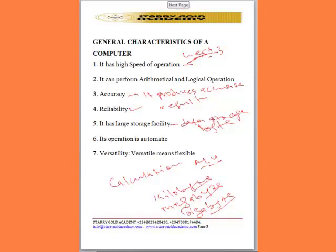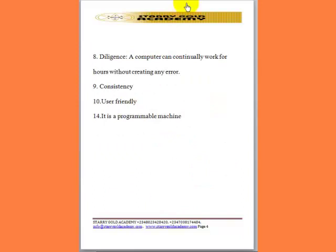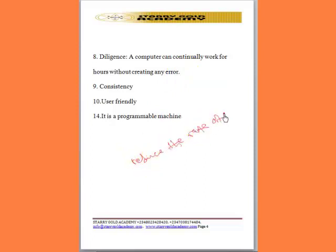The computer's operation is automatic. The computer system is also very versatile — it is very flexible and can be used for many operations. In terms of diligence, a computer can continually work for hours without creating any error, which reduces the rate of error in any office or operation. It is consistent in its mode of operation without accuracy being affected, and it is user friendly, easy to use, and is a programmable machine that cannot work without a program.